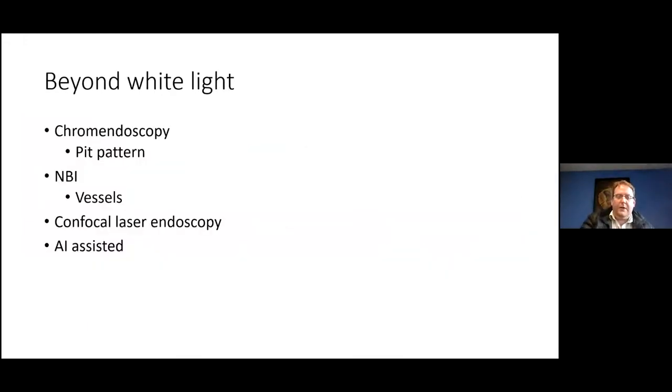We have our Paris classification of morphology, which shows you as you move along from type 1 all the way down to type 3, you're moving along to more malignant potential for those polyps. However, once you move beyond white light endoscopy, you have a whole lot of other tools at your disposal.